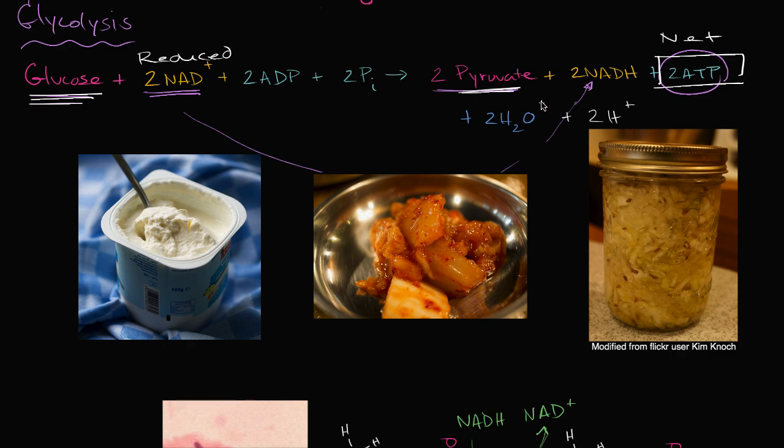But what if you're in a situation that maybe we don't have oxygen, or maybe you're just the type of organism that doesn't like to use oxygen, or doesn't know how to use oxygen, what happens next? Well, what we're gonna talk about in this video is one potential pathway, and that's lactic acid fermentation, which is one of the two major forms of fermentation. Lactic acid fermentation.